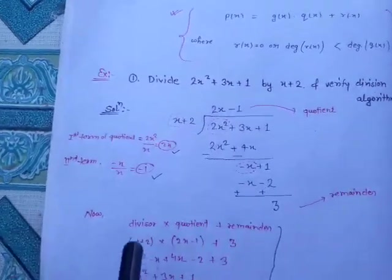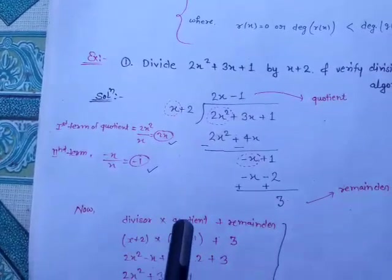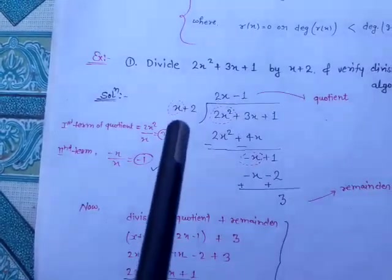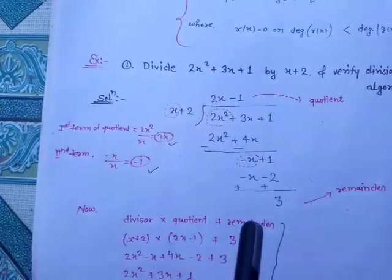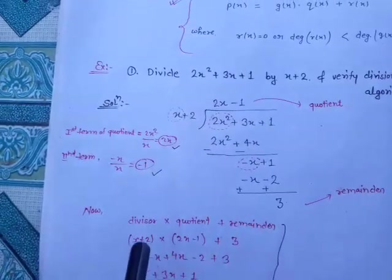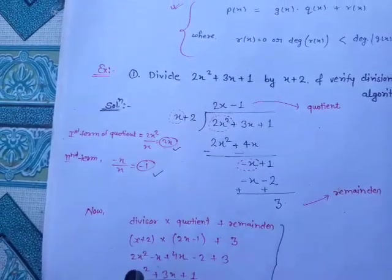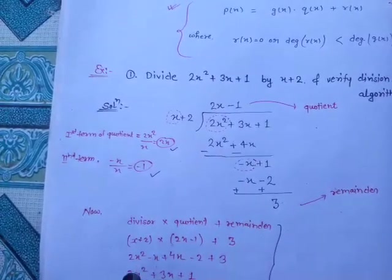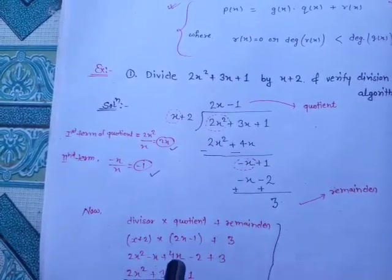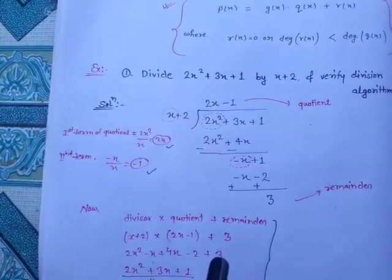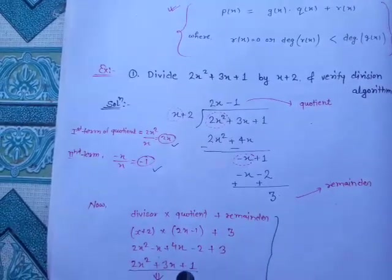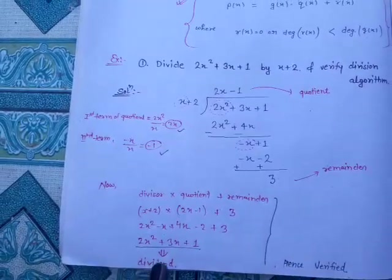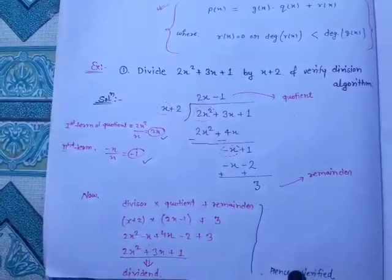Now for verification: dividend = divisor × quotient + remainder. Substituting: (x + 2)(2x − 1) + 3 = 2x² − x + 4x − 2 + 3 = 2x² + 3x + 1. This equals the original dividend. Hence verified.